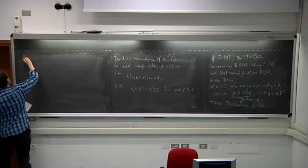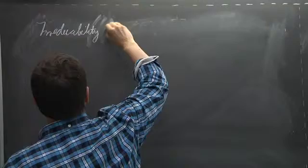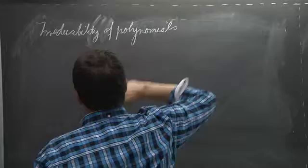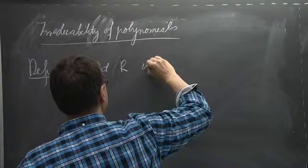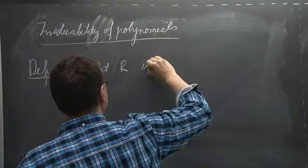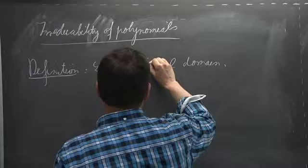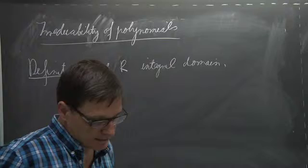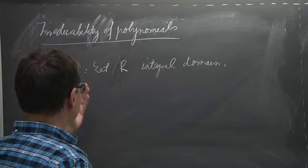First we talk about irreducibility in general. Definition: in an integral domain R, an element is called irreducible if it cannot be written in a non-trivial way as a product of two other elements. The trivial way would be writing it as a product of something with a unit.